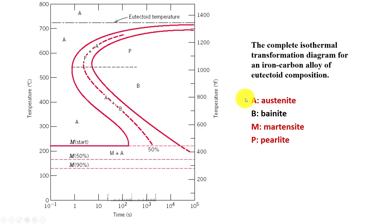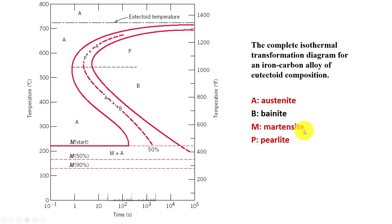We have four names here: A is for austenite, B is for bainite — we'll talk about that in a minute — M is for martensite, which is what we're trying to make, the hardest material. But it's hard and brittle, so we usually temper it afterwards in a secondary process. Pearlite is not going to be as strong. We talked about ferrite as well.